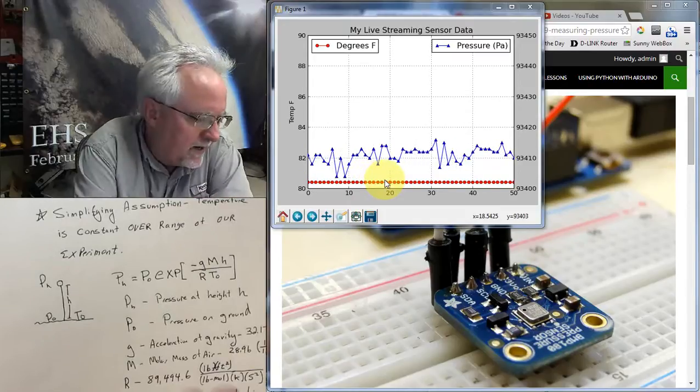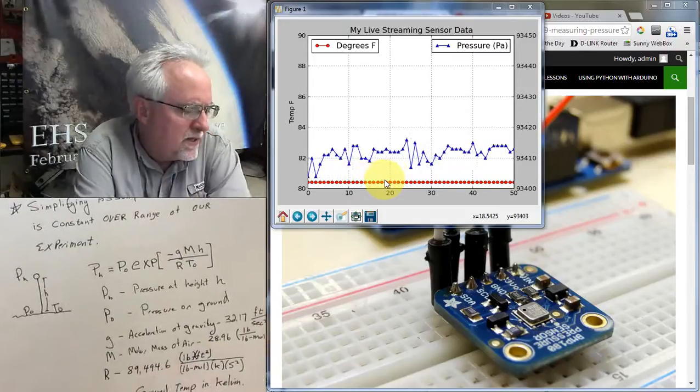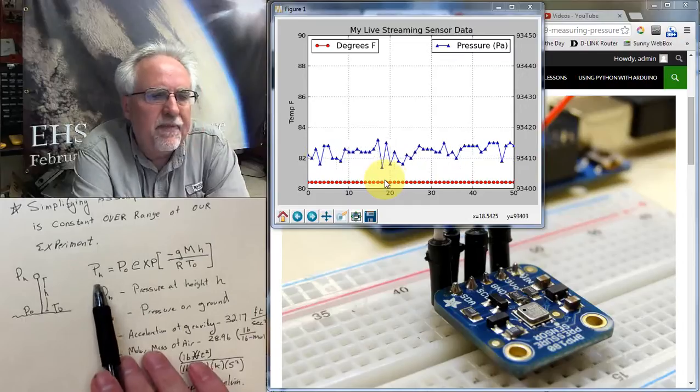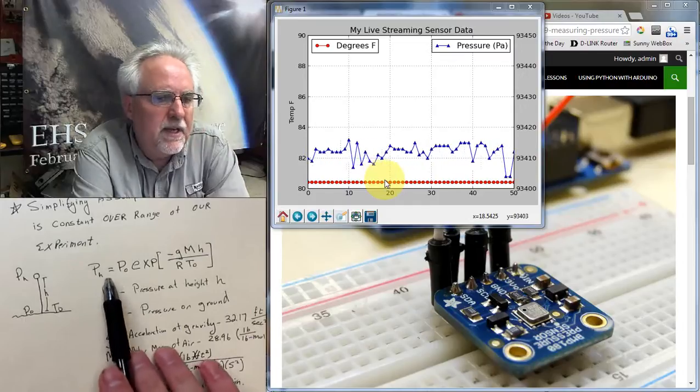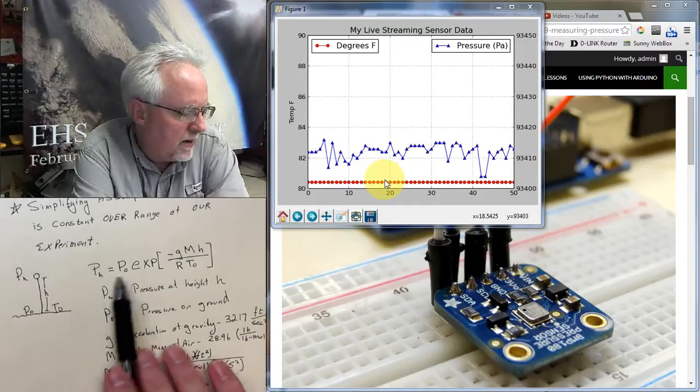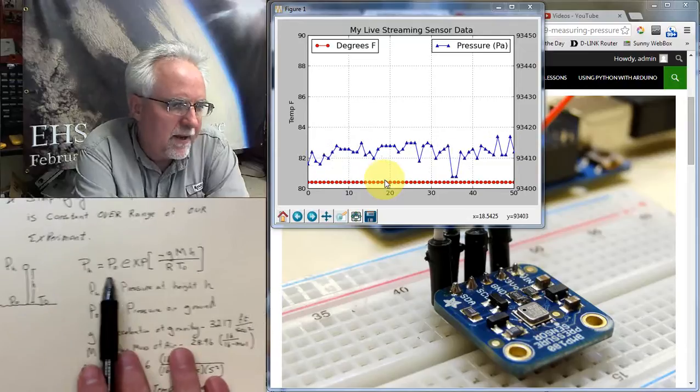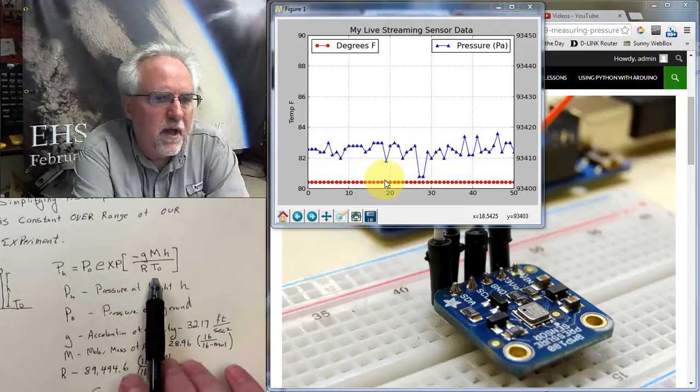With this simplifying assumption, what we can say is, is that the pressure at that height is equal to the pressure at the ground, P0, times the exponential of this thing,